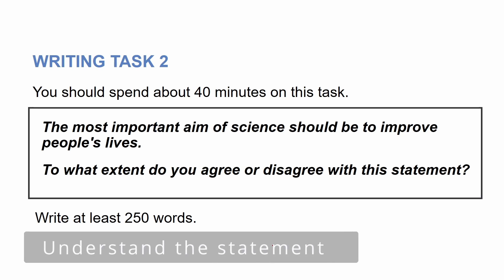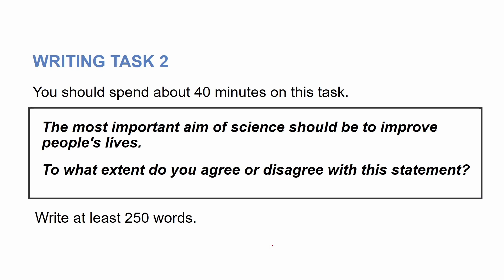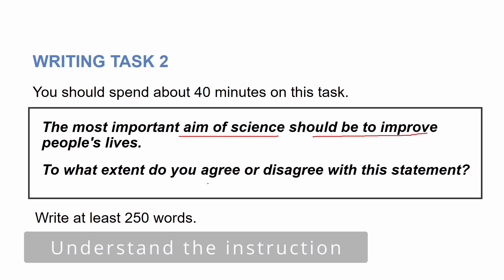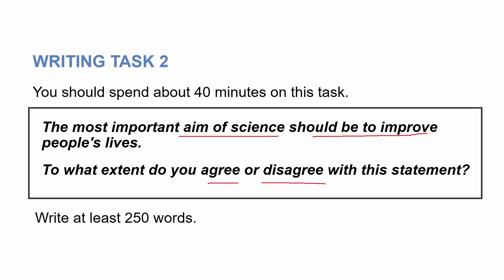So as usual, we need to spend some time on the statement to understand it. This question reads: the most important aim of science should be to improve people's lives. The topic is about the aim of science. Now, the instruction says: to what extent do you agree or disagree with this statement? You could say I agree, I disagree, or I agree to some extent, partially agree, and so on. But my recommendation is to take a clear side and simply say I totally agree or totally disagree.